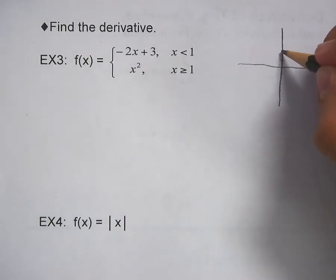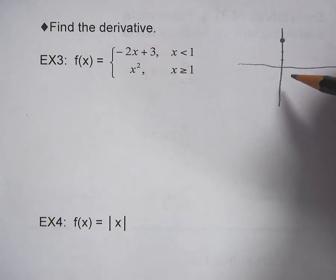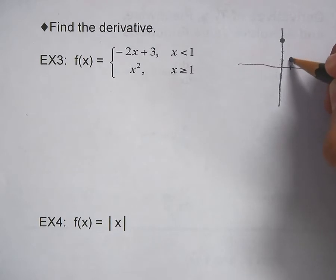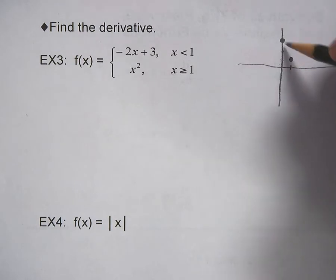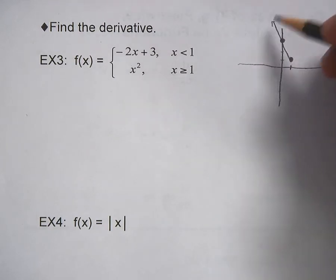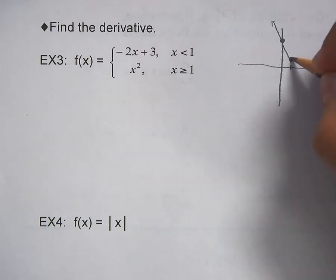It's a y-intercept of three and a slope of negative two. Put a one in there and it's one, so it'll be one there as well. Then it's x squared from there on, so it's going to be a parabola up here.